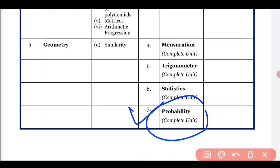There is also no reduction in Probability, so you have to complete that as well. To summarize, Semester 2 Maths syllabus has Coordinate Geometry in full, Mensuration with Sphere removed, Circles with construction of tangent removed, and Trigonometry, Statistics, and Probability with nothing reduced. All the best for your preparations and thank you for watching.